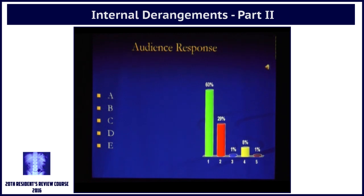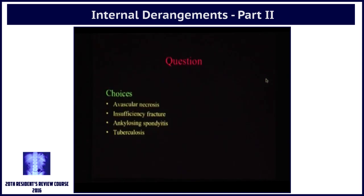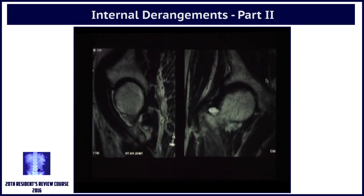If you look at this image you can see a line — a T2 dark line which is parallel to the articular surface.